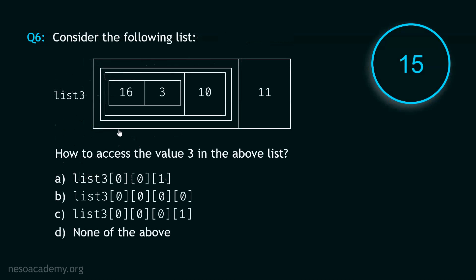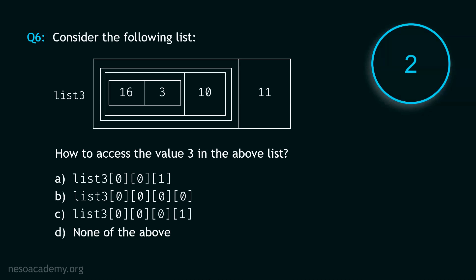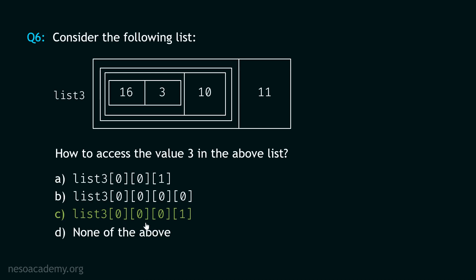Let's move to question number six. The answer is option C. List: 0, 0, 0, 1, 1.